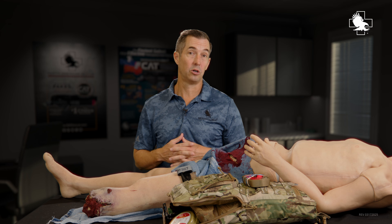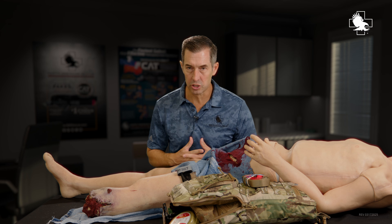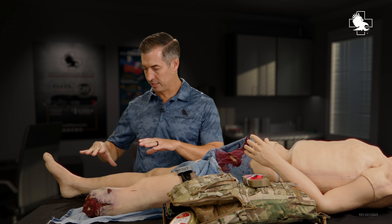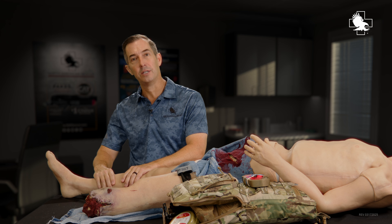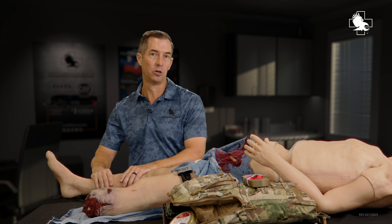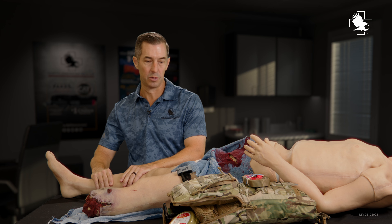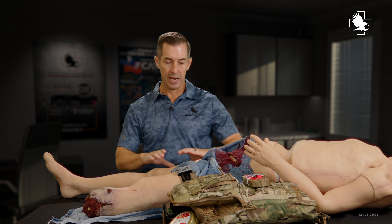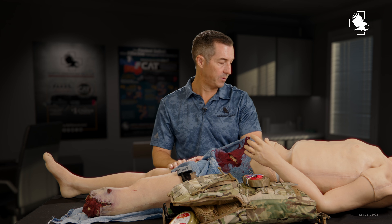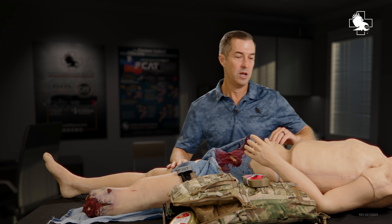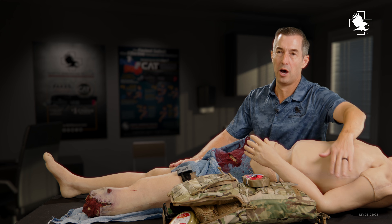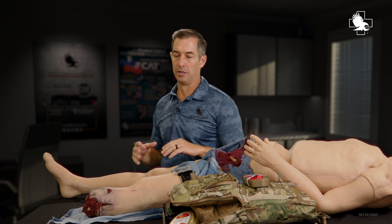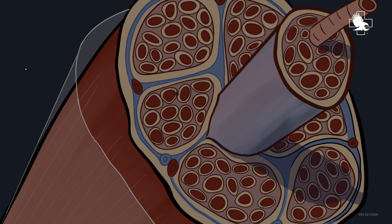Compartment syndrome can occur in many areas of the body. The most common are the legs — you have four compartments within the lower leg, and it can occur in any of those compartments. It can also occur in the thigh, the forearm, the upper arm, and a few other places in the body.